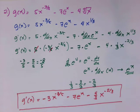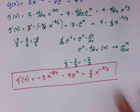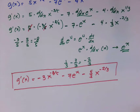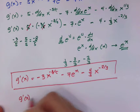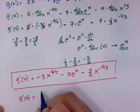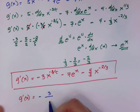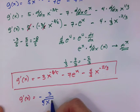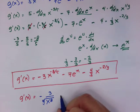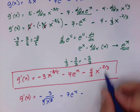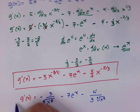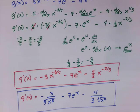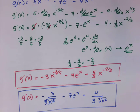If you want to further simplify by converting negative and fractional exponents into radical form, g prime of x can be rewritten as negative 3 over the fifth root of x to the 8th, minus 7e to the x, minus 4 over 3 times the cube root of x squared. That's another version of our derivative using algebra.